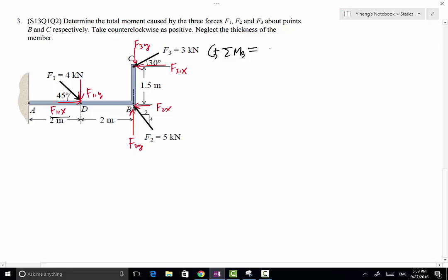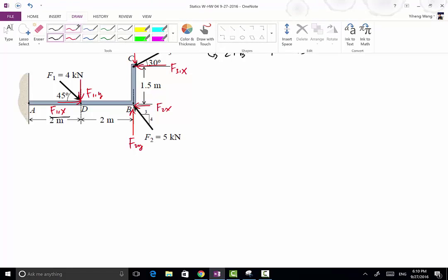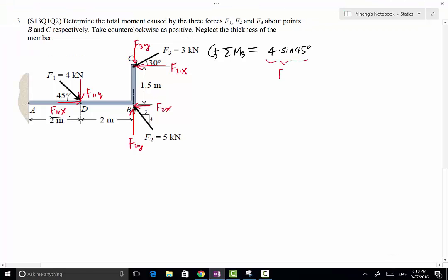F1Y has the magnitude of 4 kN times sine 45 degrees. That's the magnitude of F1Y. Its moment arm to point B is easy to determine, it's simply 2 meters. It's causing a counterclockwise rotational effect, therefore the moment is positive.